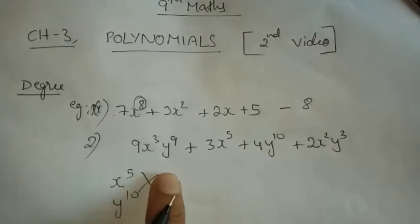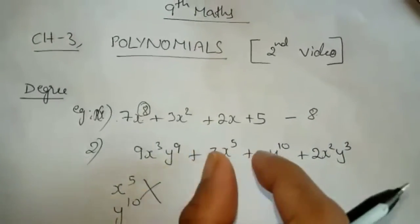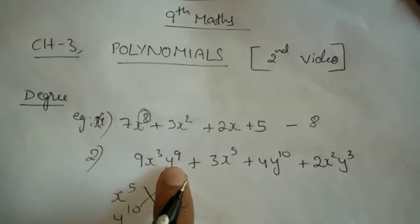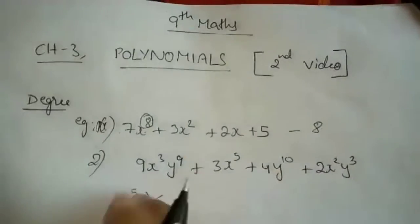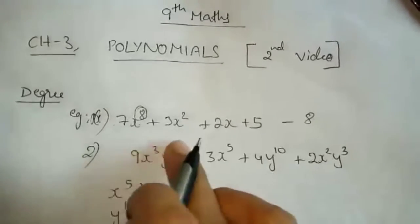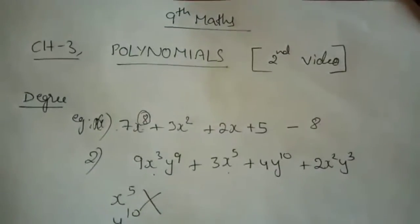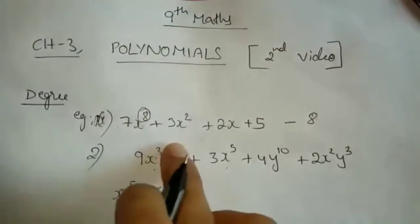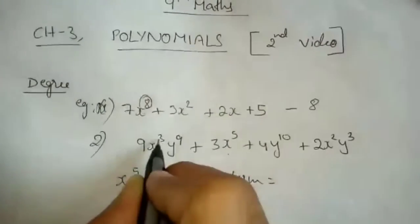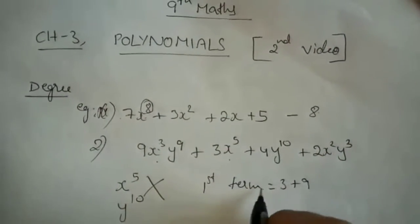How will you find out the degree? In a polynomial in two variables, you have to see each term, and for each term you have to look at both variables' powers and add them. So, in the first term, X's power is 3 and Y's power is 9. You have to add them: 9 plus 3 equals 12.